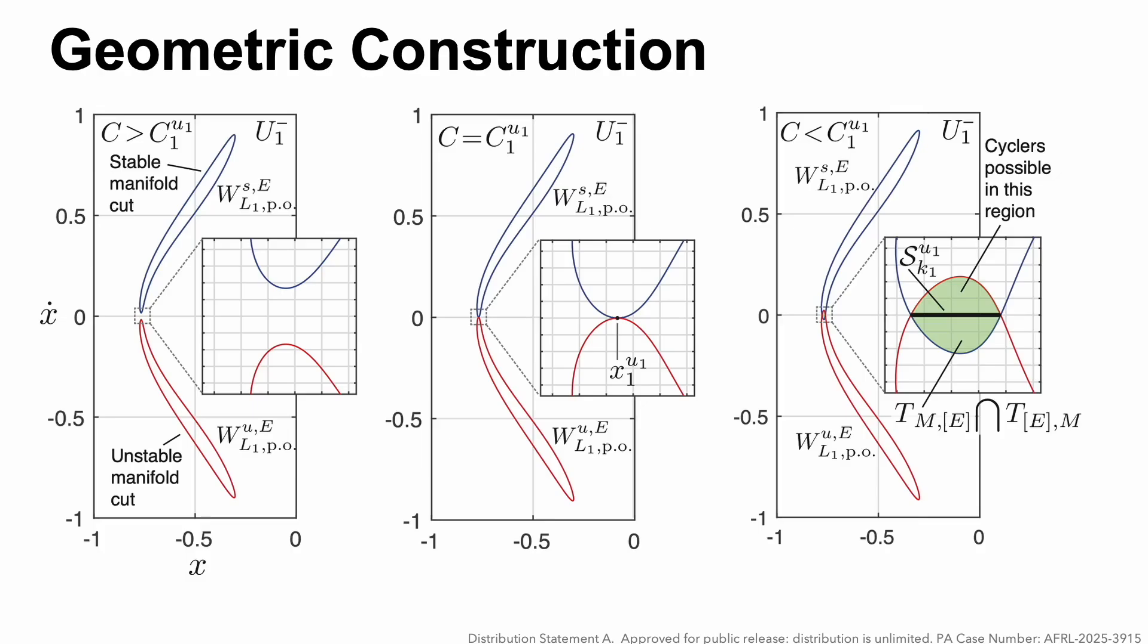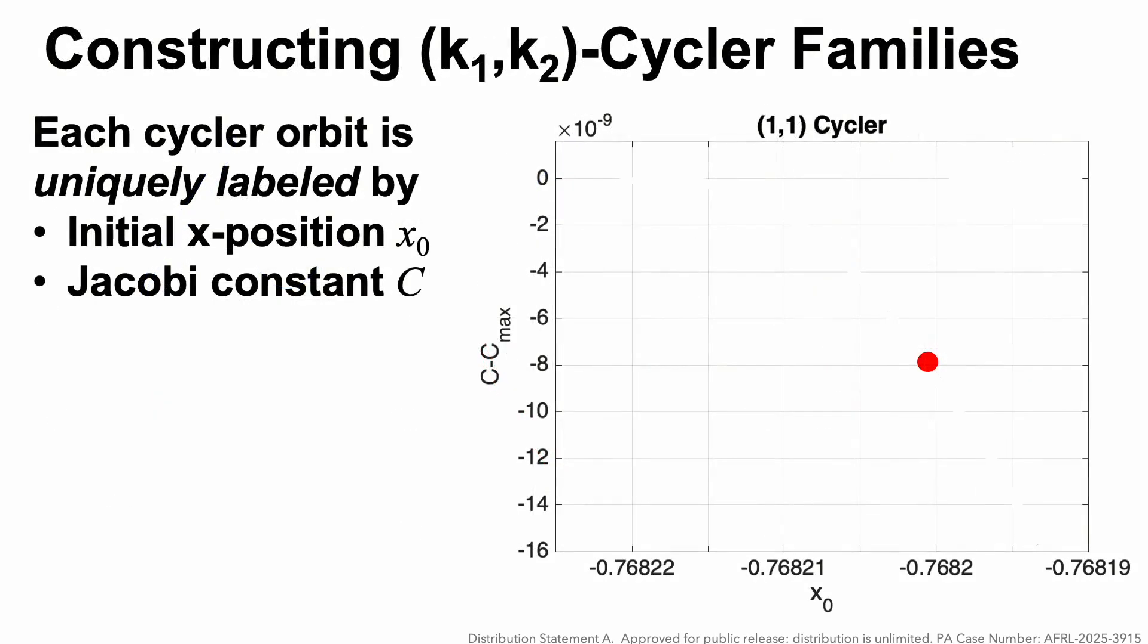We can do a similar construction in the Moon realm. If we look for the intersection of the forward propagation of this thick black line with the corresponding region in the Moon realm, we can construct cyclers or a cycler for a particular value of the Jacobi constant. Each cycler is uniquely labeled by its initial x position and the Jacobi constant.